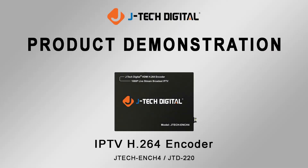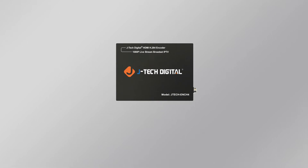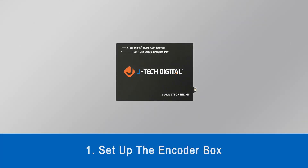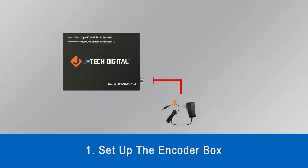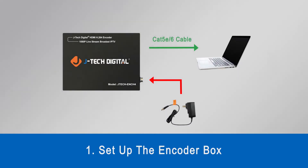In this video, I'm going to walk you through the process of setting up your JTEC Digital H.264 encoder. So the first thing we're going to do is set up the encoder box. You can do this by connecting the encoder to the power source with a power cable, and then connecting the encoder to your laptop or computer with an ethernet cable.